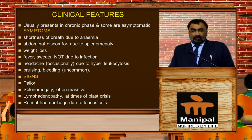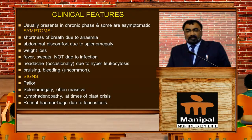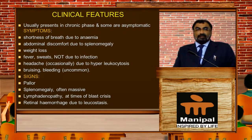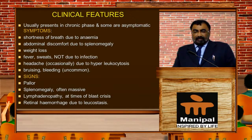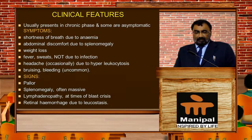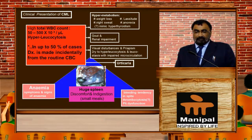Symptoms include shortness of breath due to anemia, abdominal discomfort due to splenomegaly, weight loss, fever, sweats not due to infections, and headache occasionally due to hyperleukocytosis. Bruising and bleeding are not very common. Signs include pallor, often massive splenomegaly, lymphadenopathy at times, blast crisis, and retinal hemorrhages often due to leukostasis.